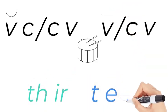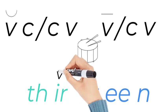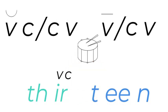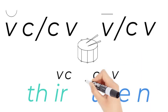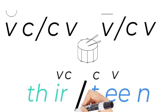So let's have a look at the word. There's a vowel, consonant, consonant, vowel. So we have to draw it between the consonants. Thirteen.